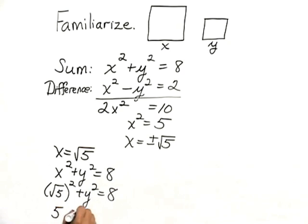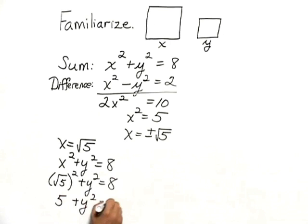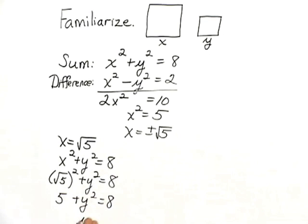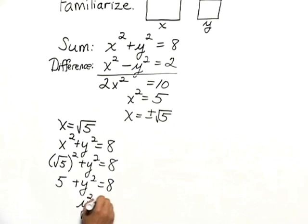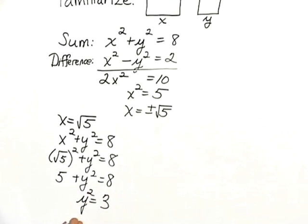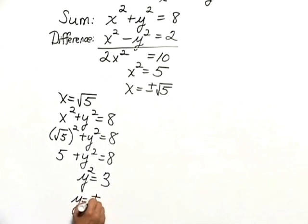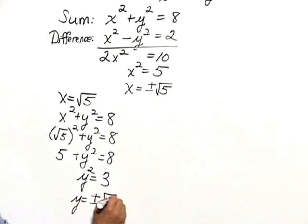So we have 5 plus y squared equals 8. So y squared has to be 3. So y has to be the positive or negative square root of 3.